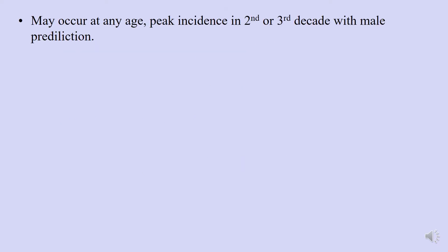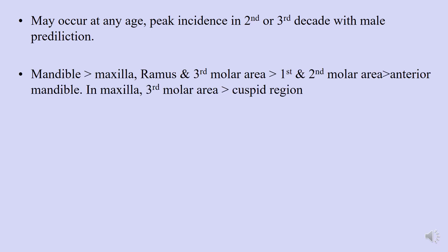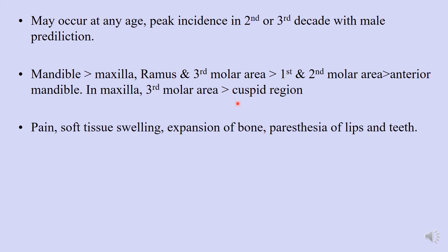Now let's look at the clinical features. OKC may occur at any age, with a peak in the second decade and a male predilection. The mandible is more common than the maxilla. In the mandible, the ramus and third molar area is the most common location, followed by the first and second molar area, then the anterior mandible. In the maxilla, the third molar area followed by the cuspid region is more common. These features help with differential diagnosis for radiolucencies in these areas.